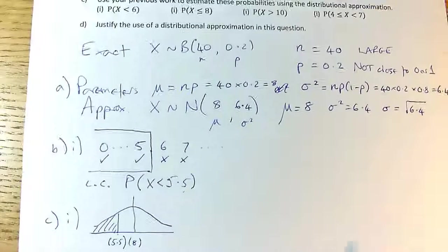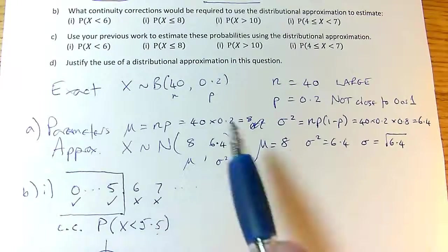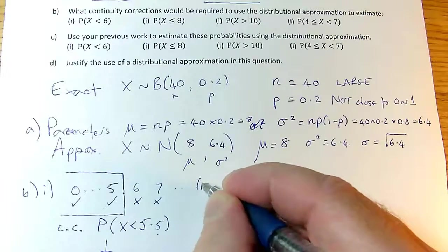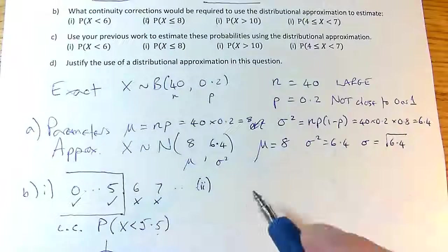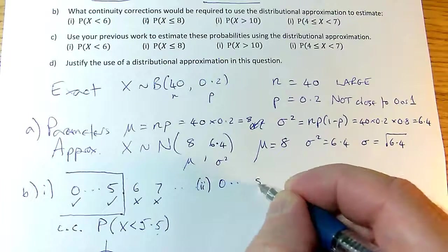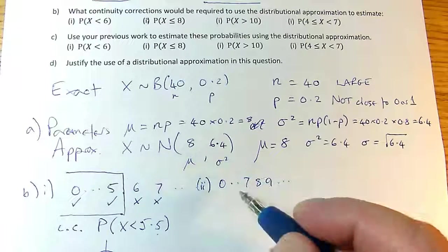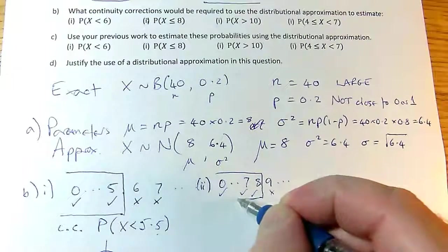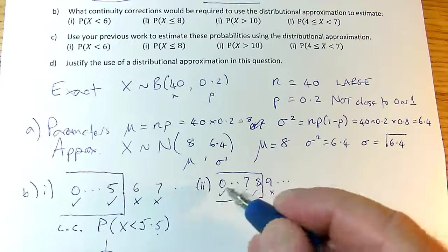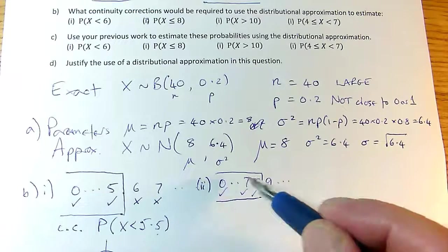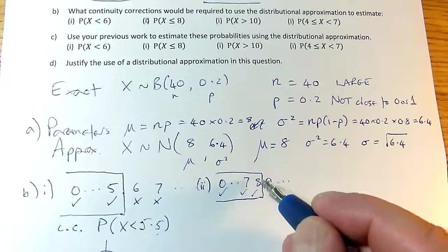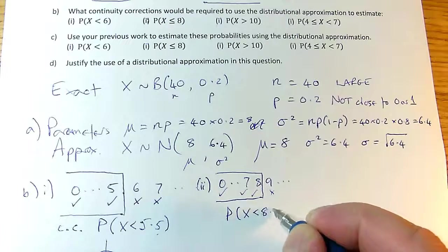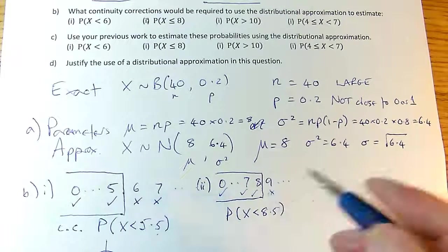Question B just asked me for the continuity correction. So the answer to this B is that the probability I need is X being less than 5.5. It would not be wrong to add less than or equal to, because remember, for a continuous one, for a normal, the probability of being on this line is actually 0. So we're going from a discrete distribution, where 5 is possible, 6 is possible, there's nothing in between, to one where all values are possible. So if I want to separate 5 and 6, I have to do that at the midpoint.